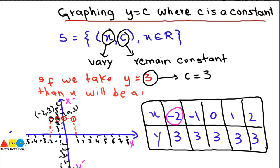You may notice that we are changing x but y remains 3 throughout the plotting. Then we plot (1, 3) and (2, 3). We have now plotted 5 points. Let's join them together to get the graph. This is the graph of the equation y equals c, where we have considered the constant value equal to 3.